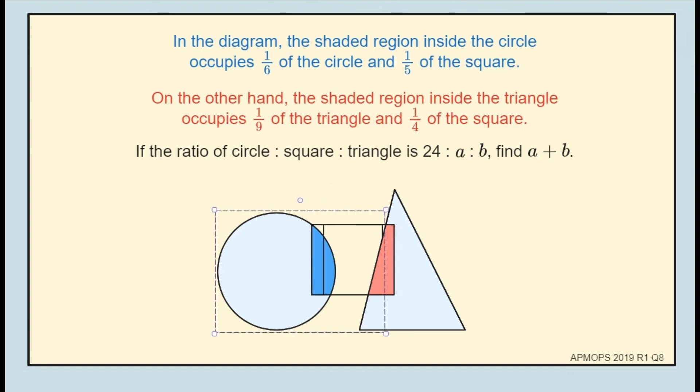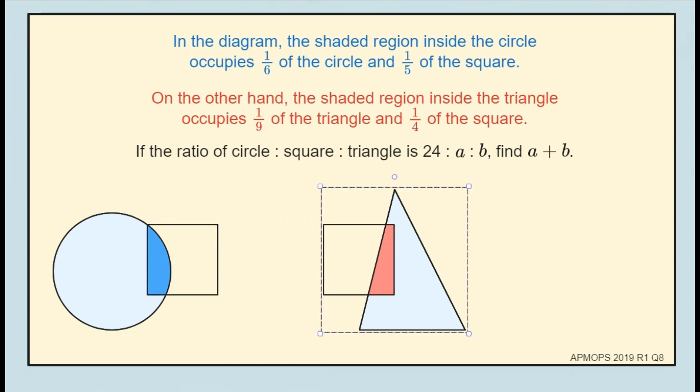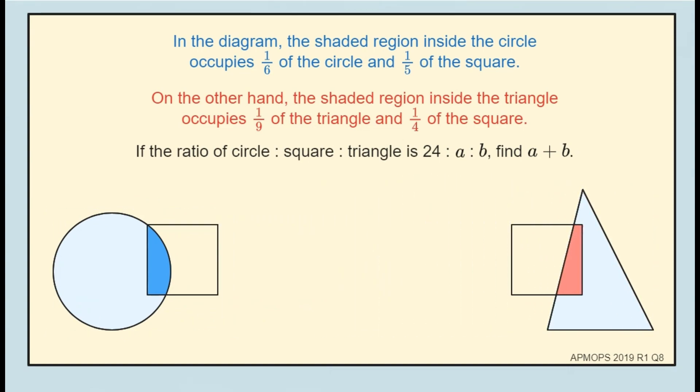Let's separate the shaded figures and analyze them separately. The blue shaded region is one-sixth of the circle and one-fifth of the square. That means the ratio of the circle to the square is 6 to 5.